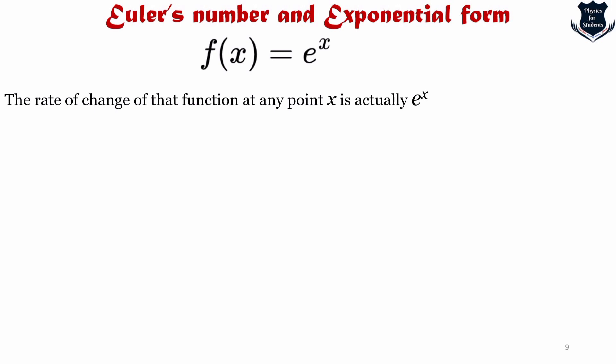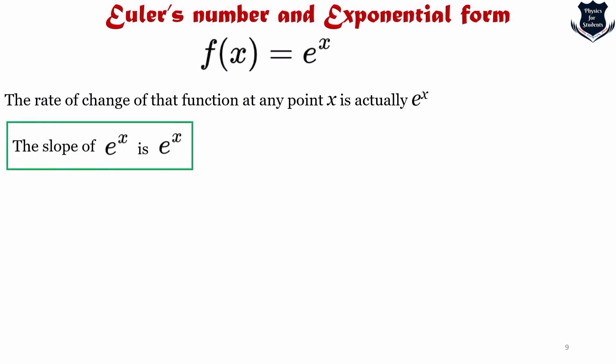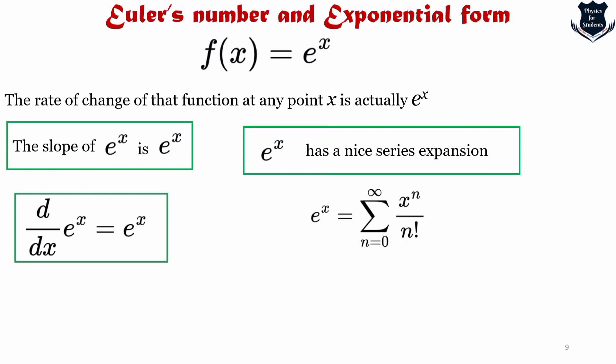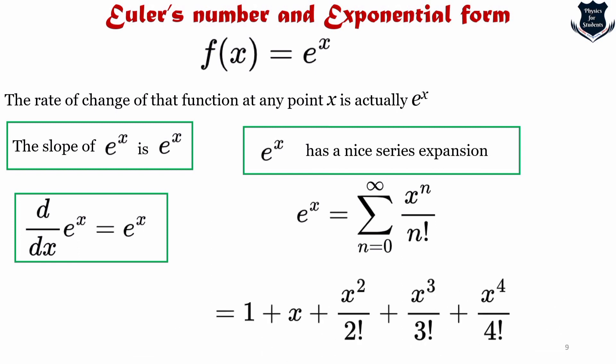The rate of change of the function e^x at any point x is actually e^x itself. So the slope of e^x is e^x, which means if we take the differential, d/dx of e^x equals e^x. Moreover, e^x has a very nice series expansion that can be used to evaluate its value: e^x equals the sum from n=0 to infinity of x^n over n factorial. Since this series converges rapidly, we can evaluate e^x for any real or complex x by adding just a few terms.